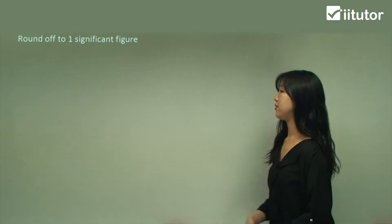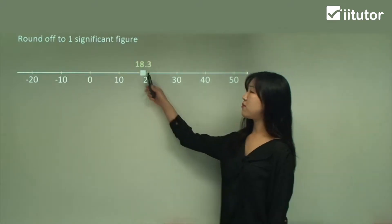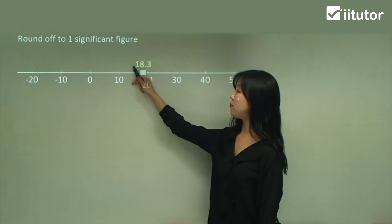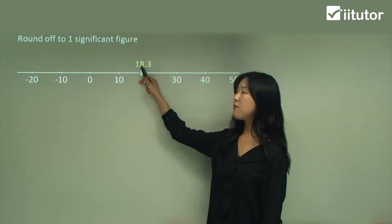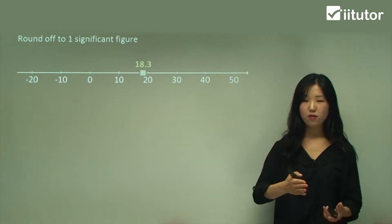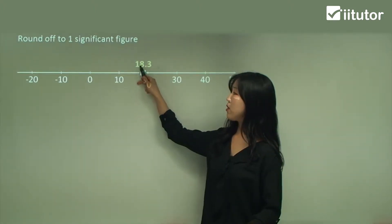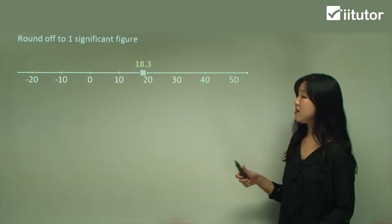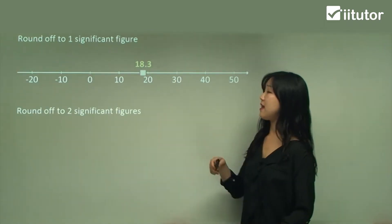Let's try some examples. Say we have 18.3 to one significant figure — we start from the very first number, which is one. Because this is 18, we're going up by tens: zero, ten, twenty, thirty. So one significant figure means we're only looking at this first digit. 18.3 is between ten and twenty, and it's closer to twenty, so we can say it's just twenty.